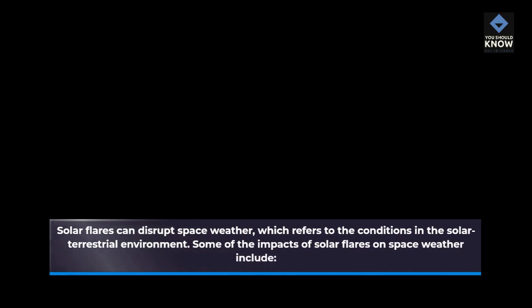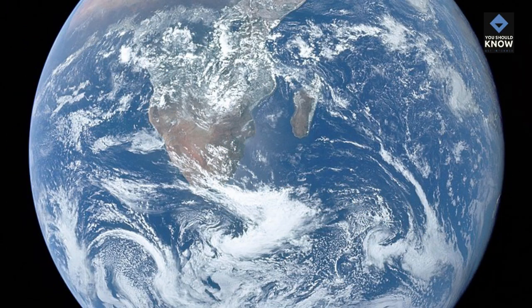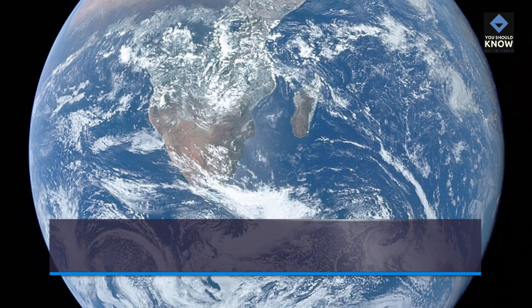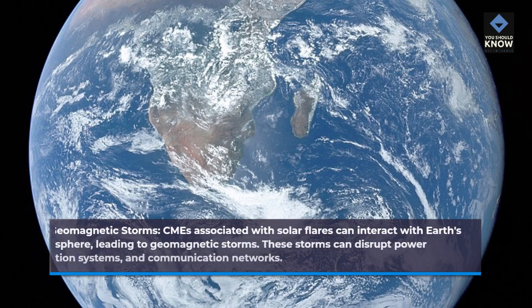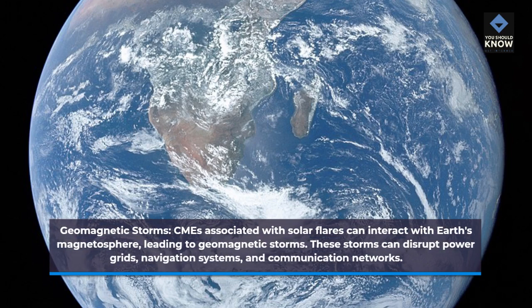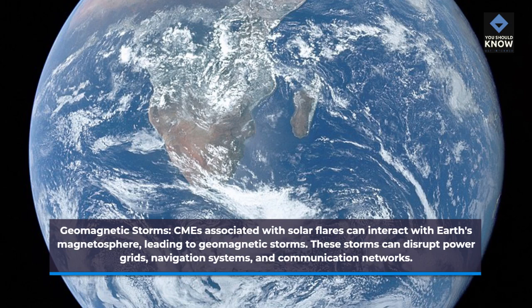CMEs can trigger geomagnetic storms on Earth. Solar flares can disrupt space weather, which refers to the conditions in the solar-terrestrial environment. CMEs associated with solar flares can interact with Earth's magnetosphere, leading to geomagnetic storms. These storms can disrupt power grids, navigation systems, and communication networks.